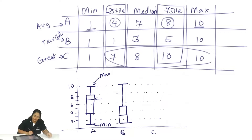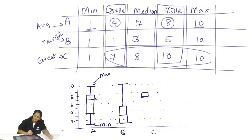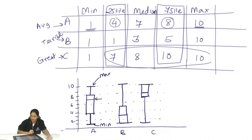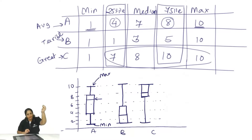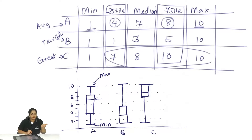For movie C — a great movie — its median is at 8. Its 25th percentile rating is 7, and its 75th percentile rating is 10. The minimum is 1. If there is no bottom whisker, it is understood that the minimum value equals the 25th percentile value. Similarly, if there is no top whisker, the 75th percentile value is the same as the maximum value.